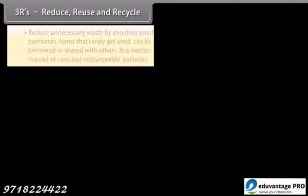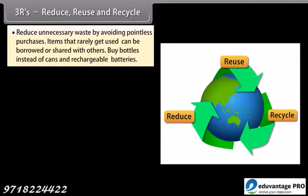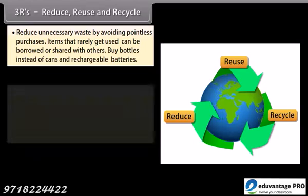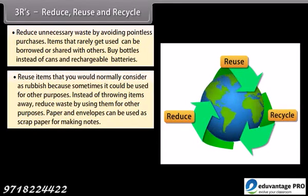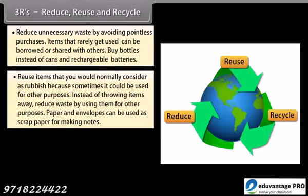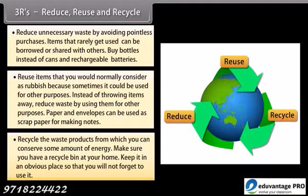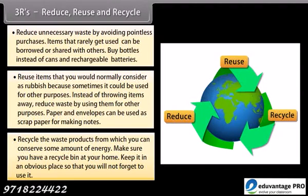3Rs: Reduce, Reuse and Recycle. Reduce unnecessary waste by avoiding pointless purchases. Items that are rarely used can be borrowed or shared with others. Buy bottles instead of cans and rechargeable batteries. Reuse items that you would normally consider as rubbish because sometimes they could be used for other purposes. Instead of throwing items away, reduce waste by using them for other purposes. Paper and envelopes can be used as scrap paper for making notes. Recycle the waste products from which you can conserve some amount of energy. Make sure you have a recycle bin at your home and keep it in an obvious place so that you will not forget to use it.